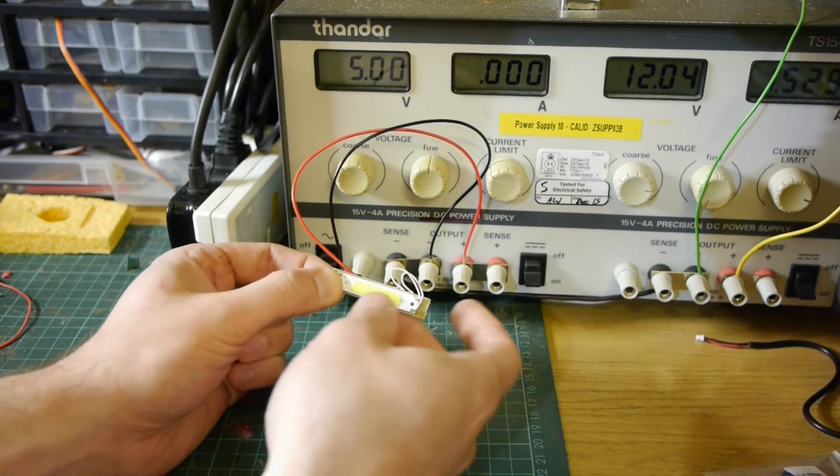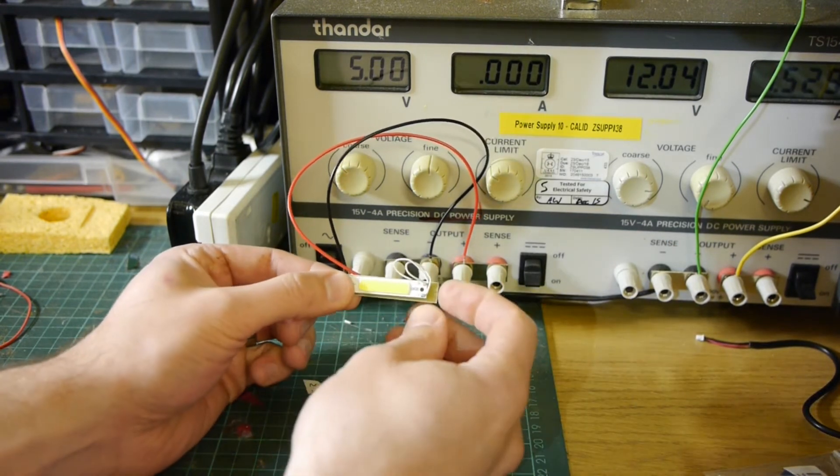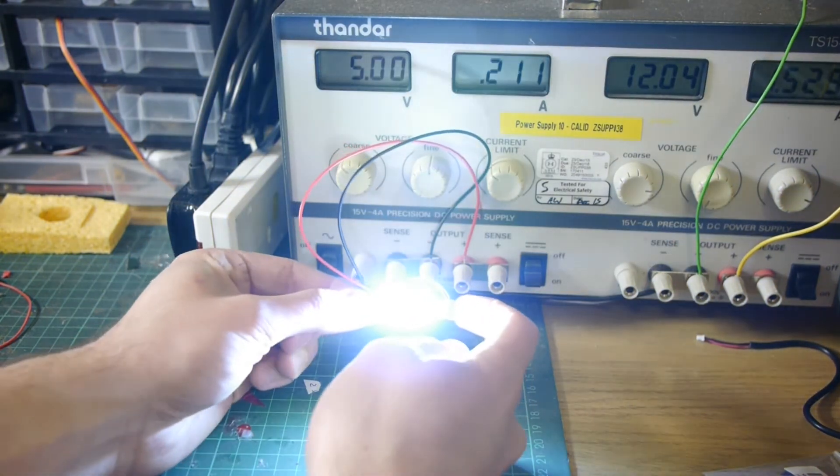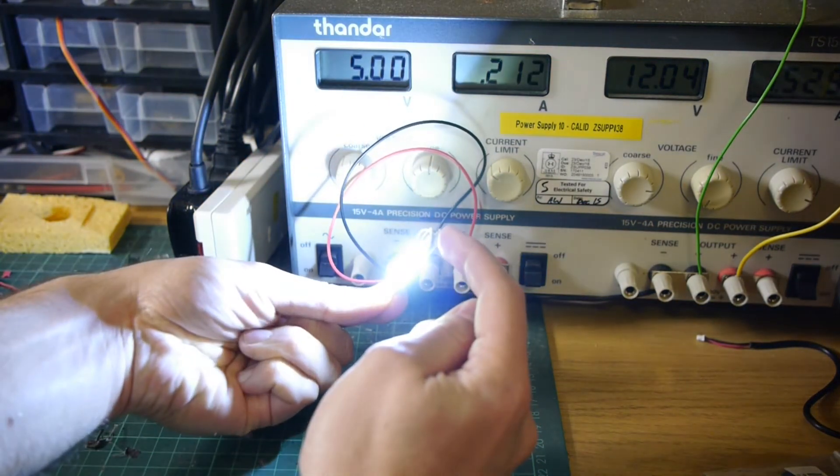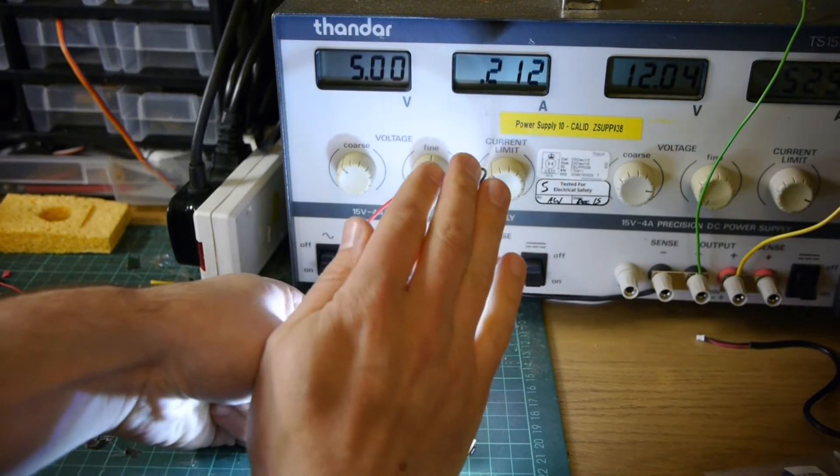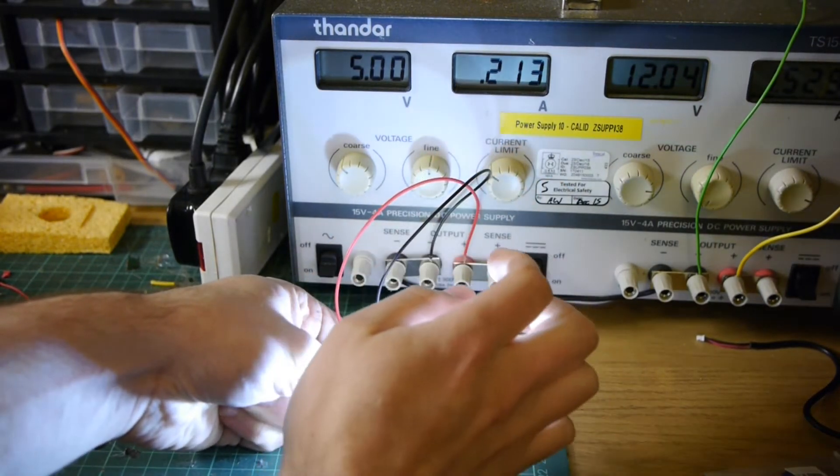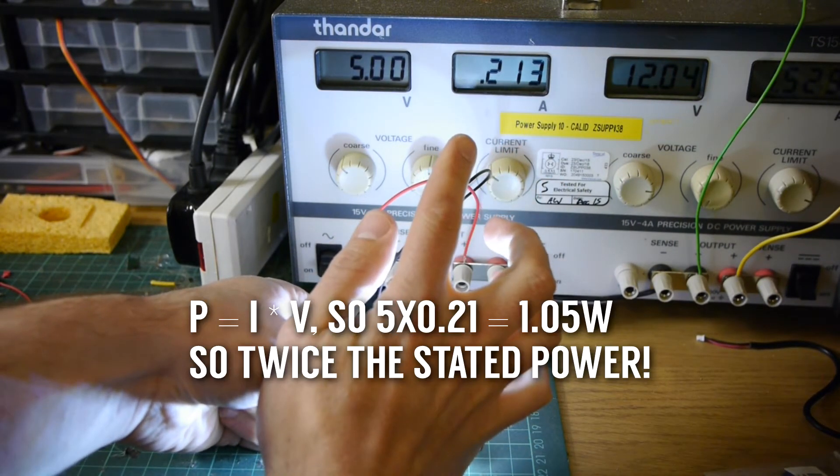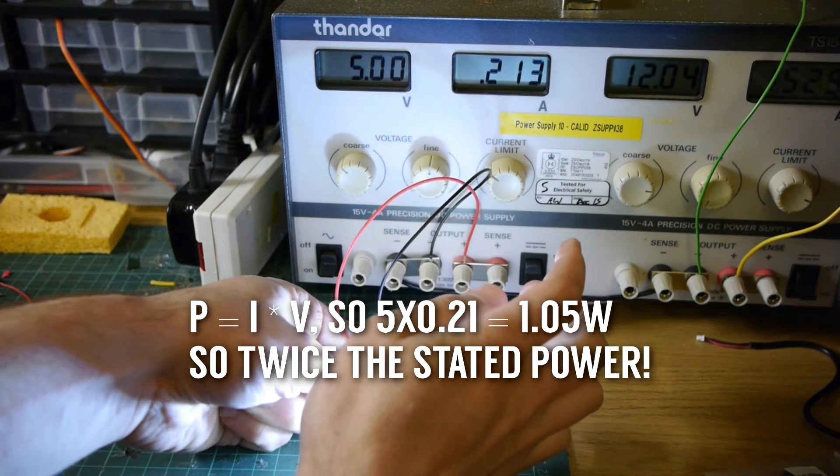But if we switch on you'll see nothing happens to begin with but pushing the switch gives you the fully on and you can see there at fully on we're drawing 213 milliamps at five volts.